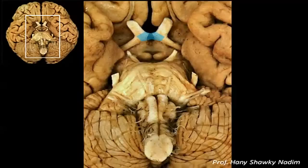The interpeduncular fossa, the optic nerve, the optic chiasma, and the optic tract. This is the infundibulum of the pituitary gland, the tuber cinereum, the mammillary body, and the anterior perforated substance.